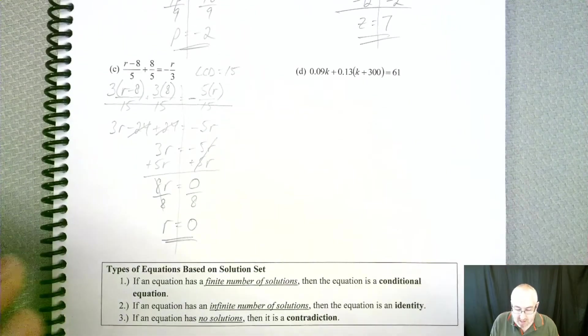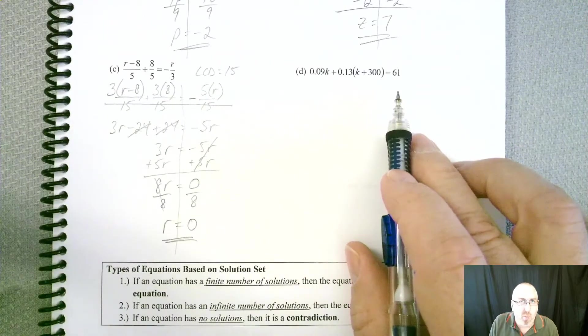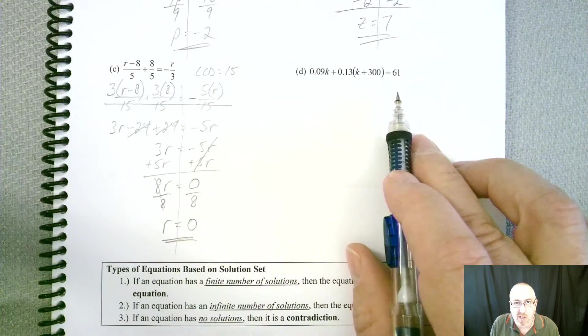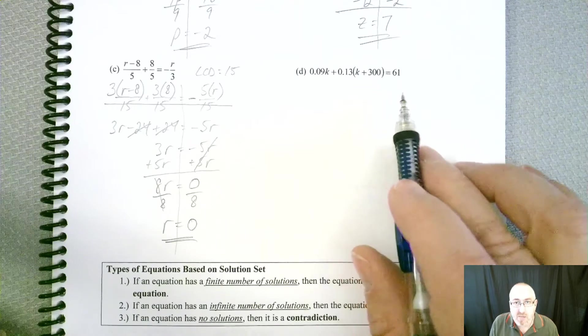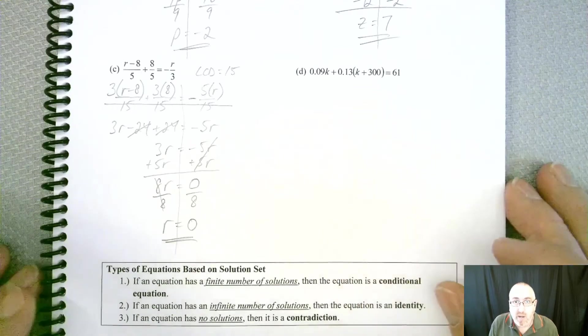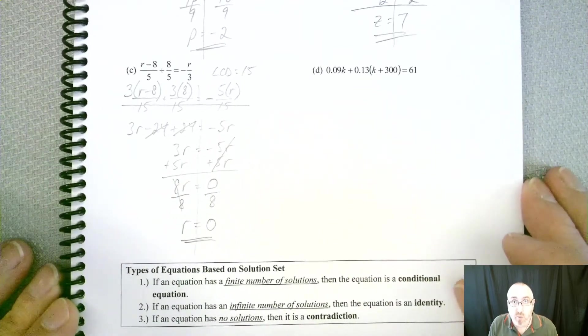Now, this last one has got decimals in it, which you're thinking, well, why is this one so hard? We can work with decimals, right? Well, decimals are like fractions. We can get rid of those decimals if we want to. We don't have to, but we can.